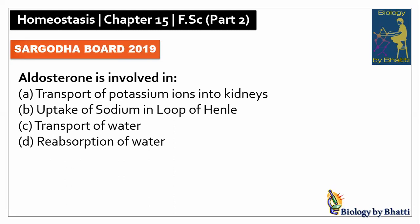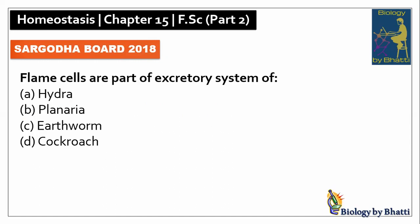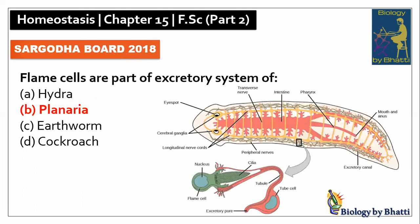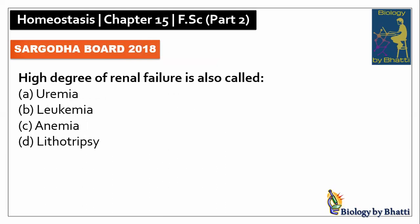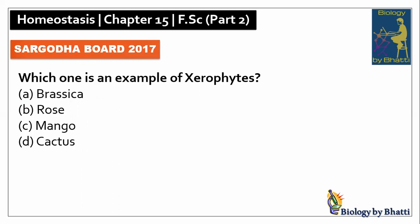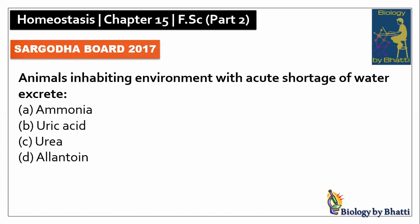DG Khan Board 2019: aldosterone is involved in the uptake of sodium in the ascending limb of the loop of Henle, so the answer is B option. DG Khan Board 2018: flame cells are part of the excretory system of planarians, so the answer is B option. DG Khan Board 2018: high degree of renal failure is also called uremia, so the answer was A option. DG Khan Board 2017: which one is an example of xerophytes — cactus — the answer was D option.